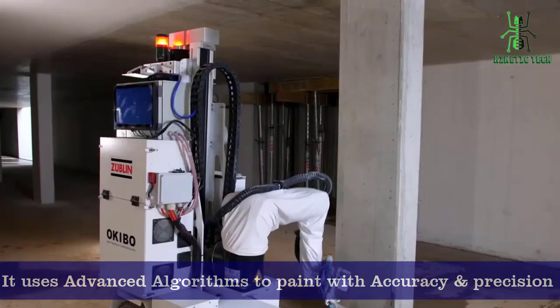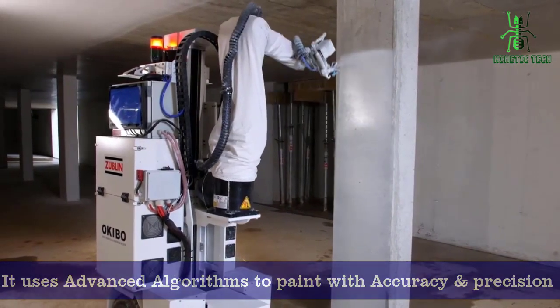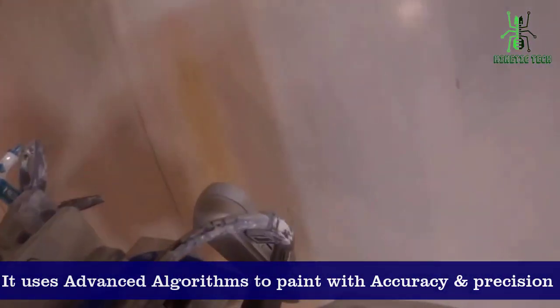By using advanced algorithms and artificial intelligence, the Okibo robot can paint with a level of accuracy and precision that is impossible for human hands to match.